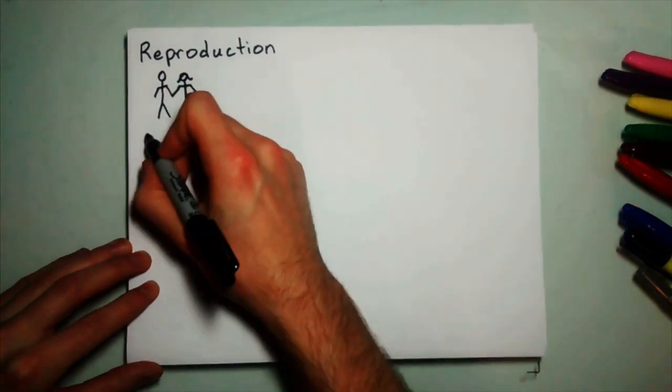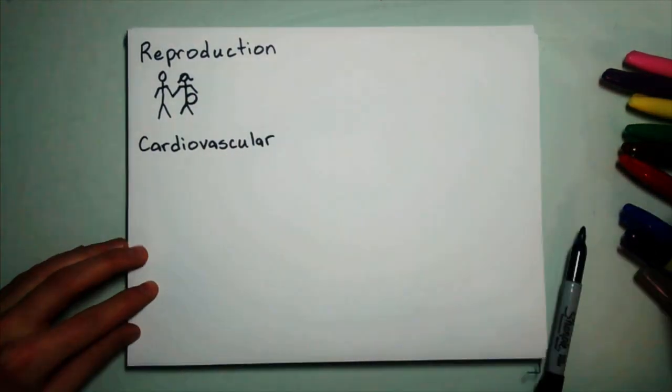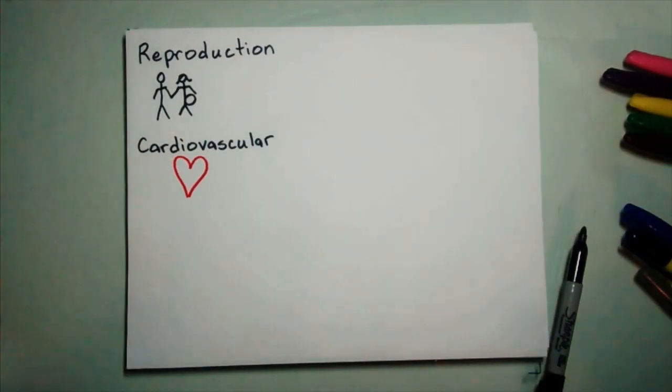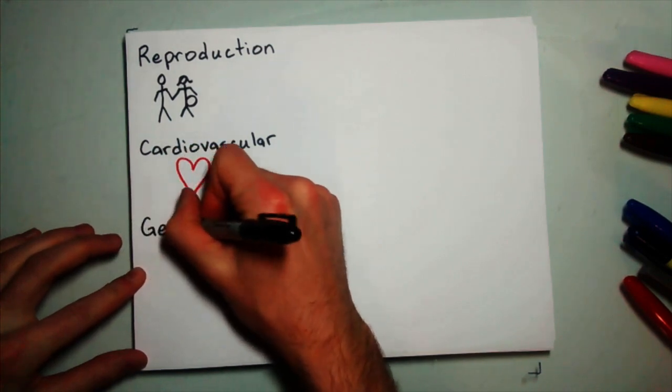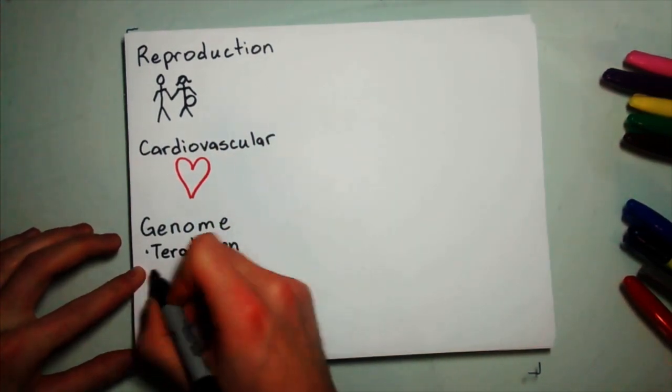Once mercury enters the cardiovascular system, it oxidizes red blood cells. In adults, mercury exposure can induce hypertension and atherosclerosis. In children, it can cause cardiovascular development abnormalities and abnormal blood pressure levels. Mercury is a teratogen and a carcinogen.